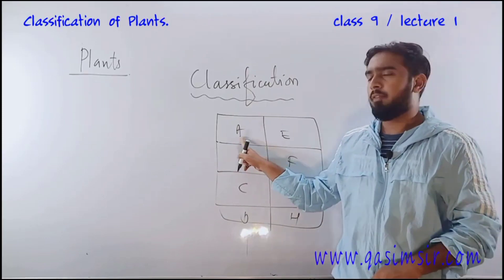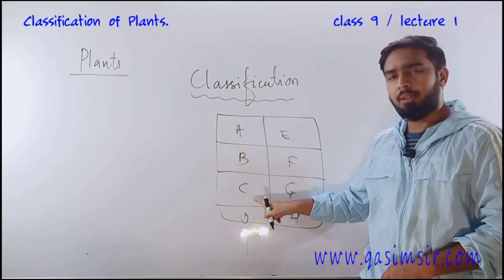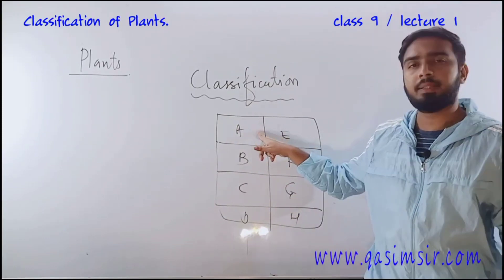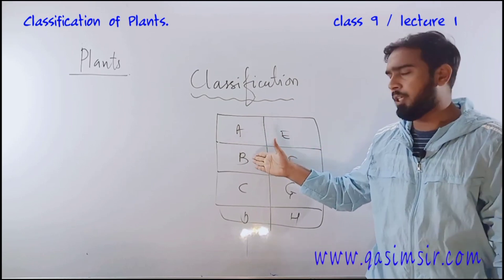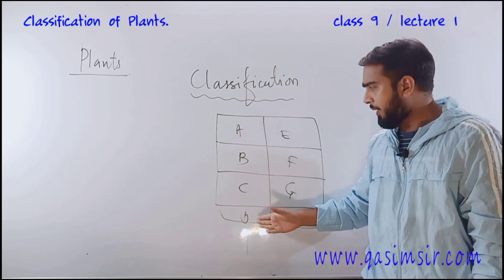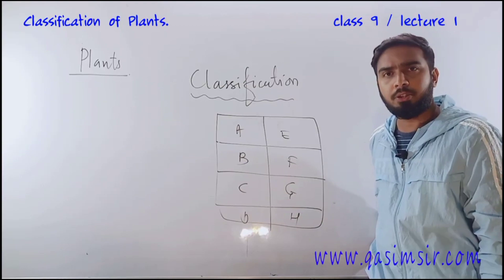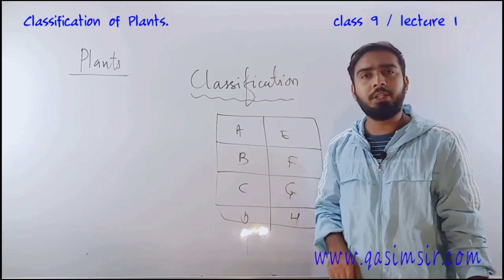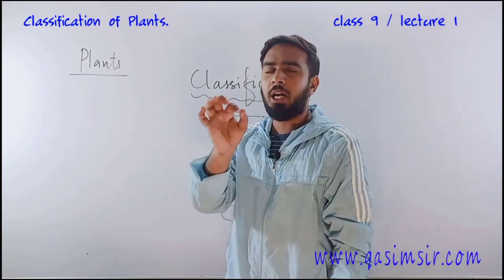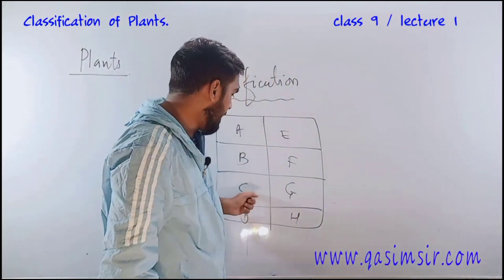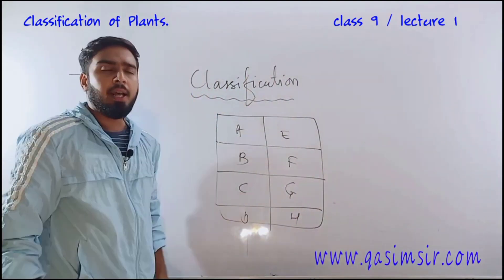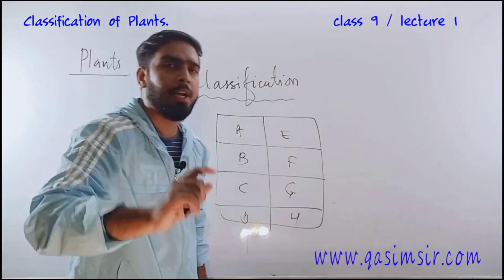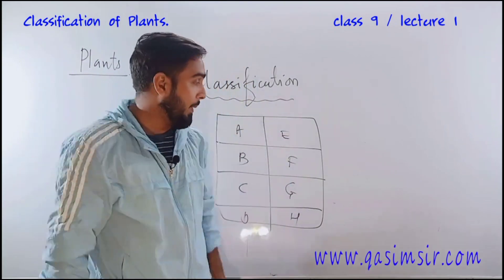starting with that alphabet. Let's say if you want Crocin, then he will not search in section A, not in B, not in D, E, F, G, H. He knows that Crocin starts from alphabet C. He will just pull it up, search that Crocin, take out that medicine and hand it over to you.